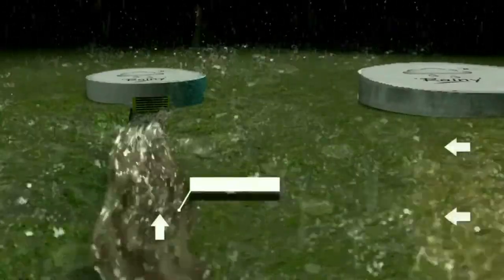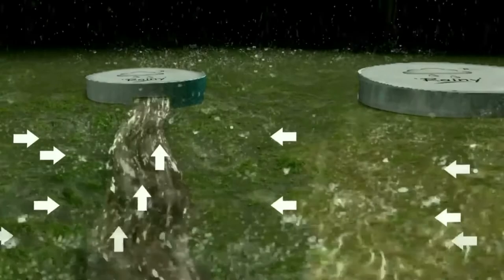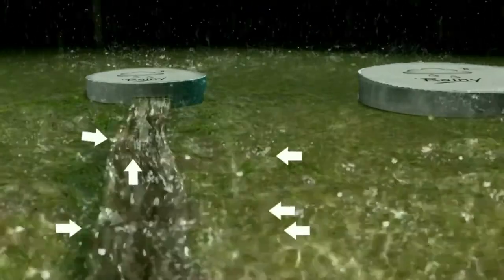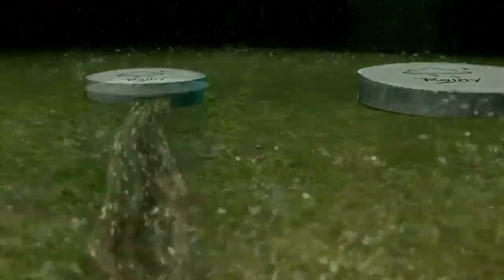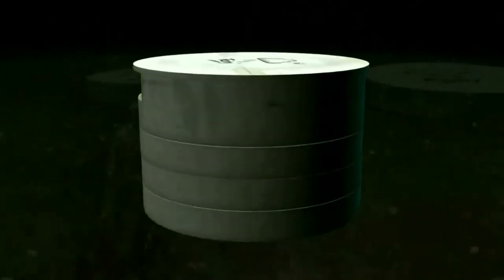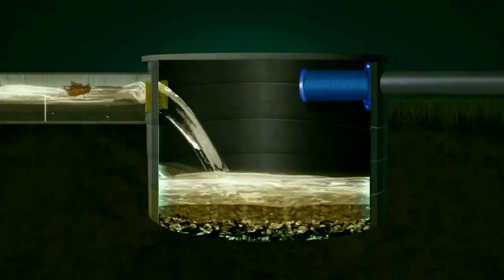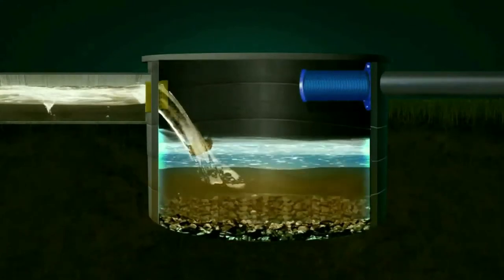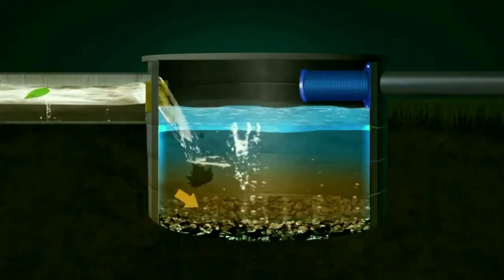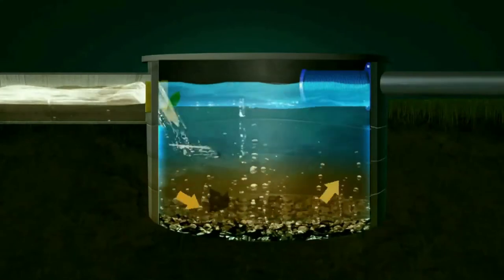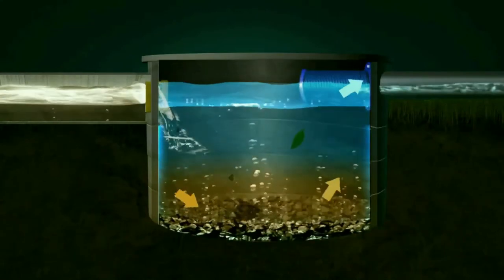The surface runoff is diverted through a water channel to a silt trap. The majority of the silt, leaves, dust, and debris settles in the silt trap.